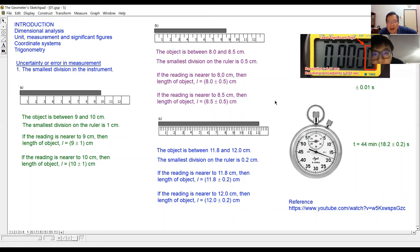Okay, 11.8 plus or minus 0.2. So the next one is your digital stopwatch. What is the smallest? 0.01. So your error or your uncertainty is 0.01. Correct.